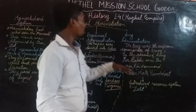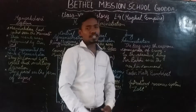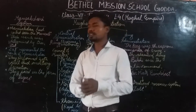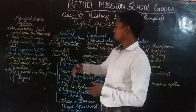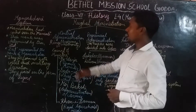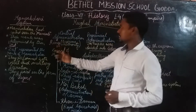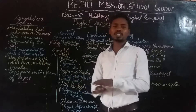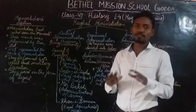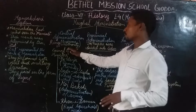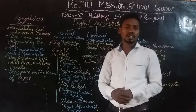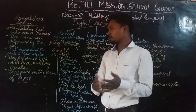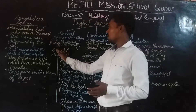Let's first go through the central administration. In the Mughal administration, the king was the supreme authority. His decisions and his word were final. He was the supreme authority; nobody could overrule the king. And he was assisted in his role by a council of ministers.